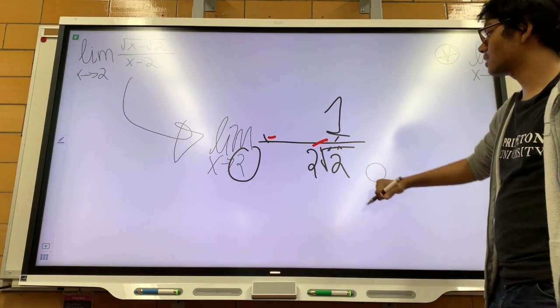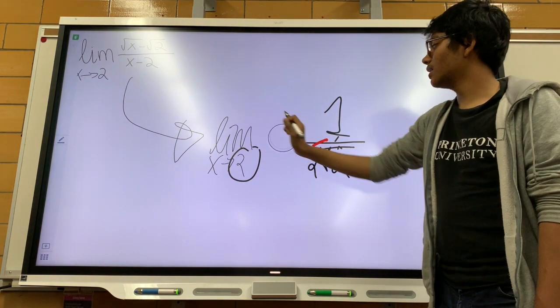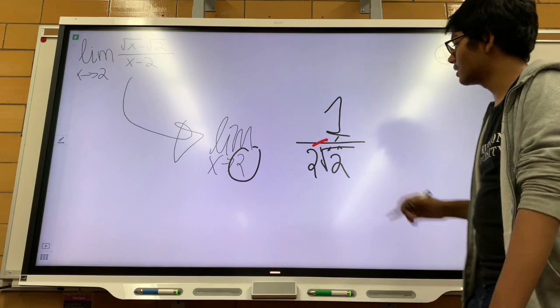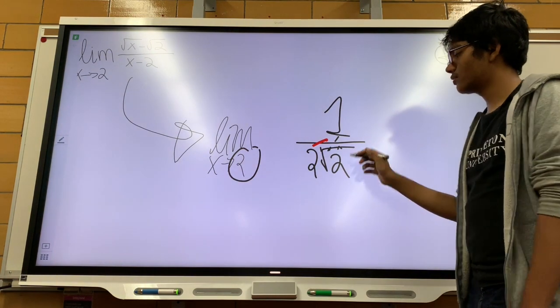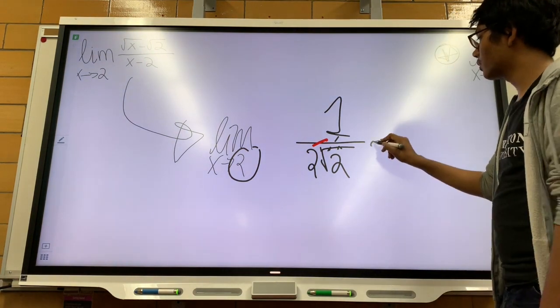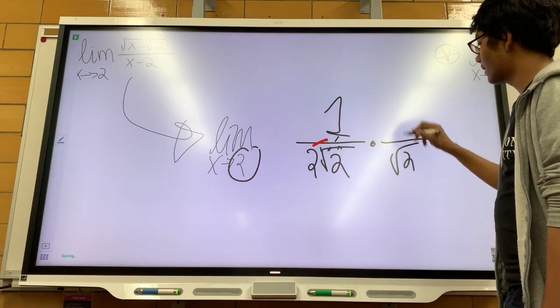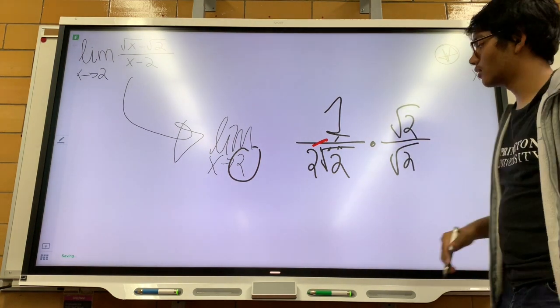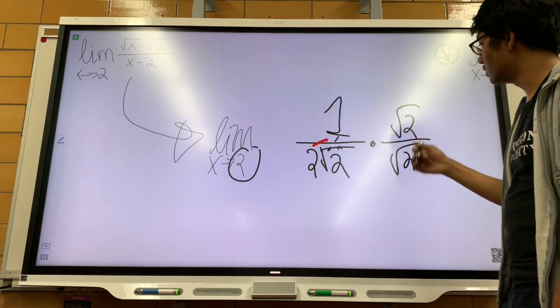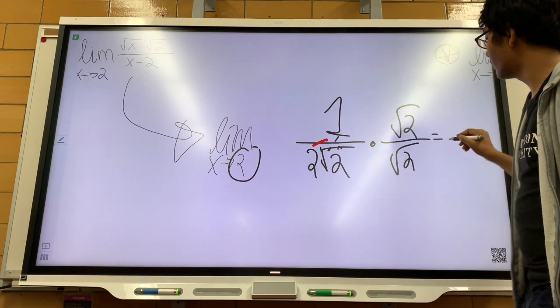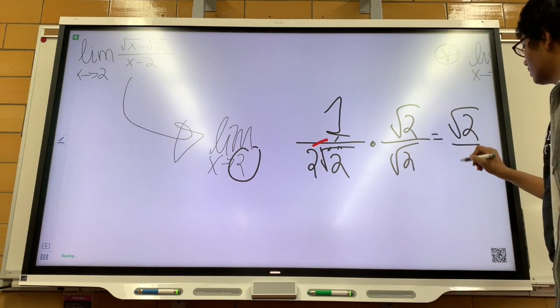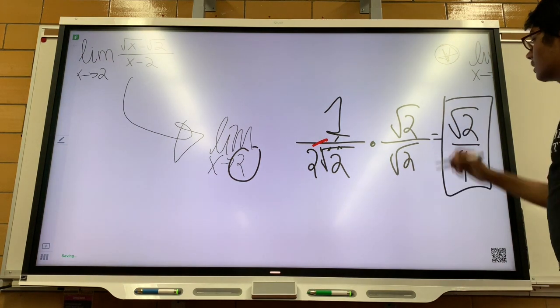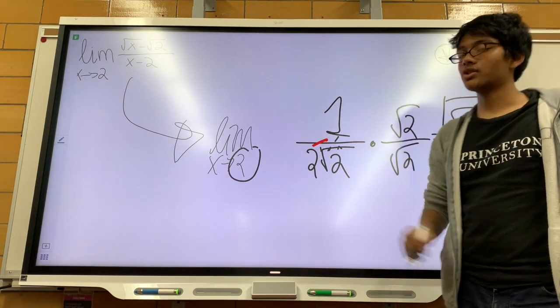Now, for some of you out there, you can just leave it like that. But in calculus, we want to simplify this radical in the denominator. And we'll do that simply by multiplying by square root of 2. And if we do that, our final answer becomes square root of 2 over 4. And that's our final answer for this question.